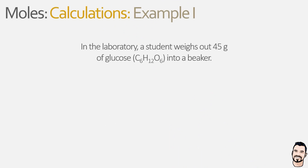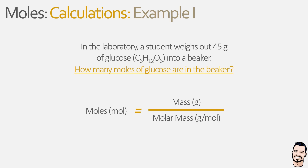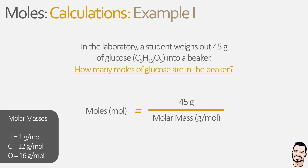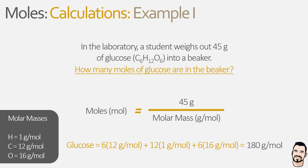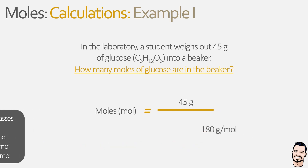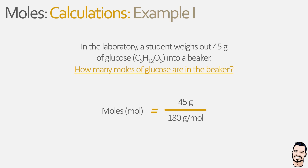In our first example, a student is told to weigh 45 grams of glucose into a beaker and wants to know how many moles that contains. The equation is: moles = mass ÷ molar mass = 45 grams ÷ molar mass of glucose. Using the periodic table: 6×12 + 12×1 + 6×16 = 180 g/mol. Substituting: moles = 45 g ÷ 180 g/mol = 0.25 moles of glucose in the beaker.